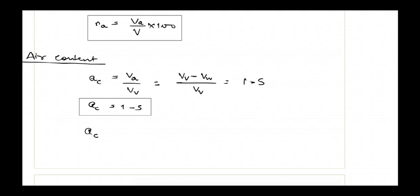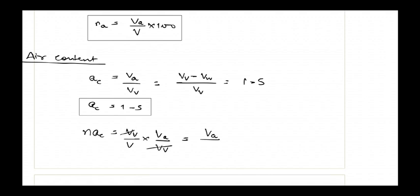We can also derive that porosity multiplied by air content equals n times ac: volume of voids divided by total volume, times volume of air divided by volume of voids — the volume of voids cancels out, giving volume of air divided by total volume. This equals the percentage air voids, so percentage air voids na equals n times air content ac.